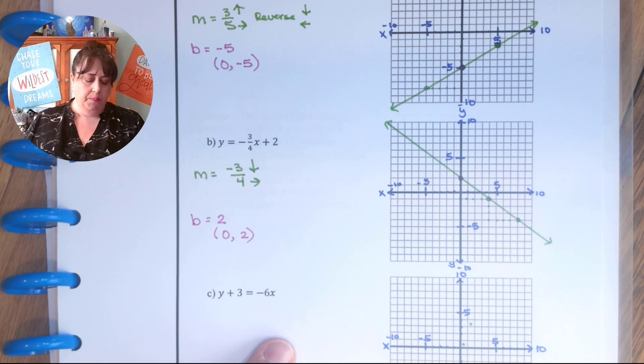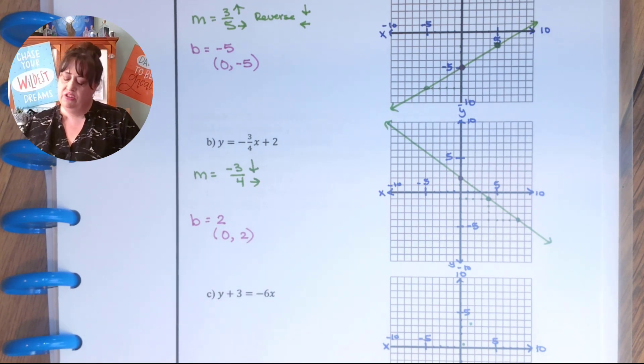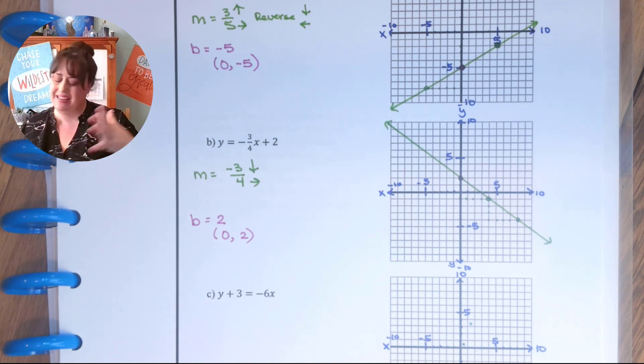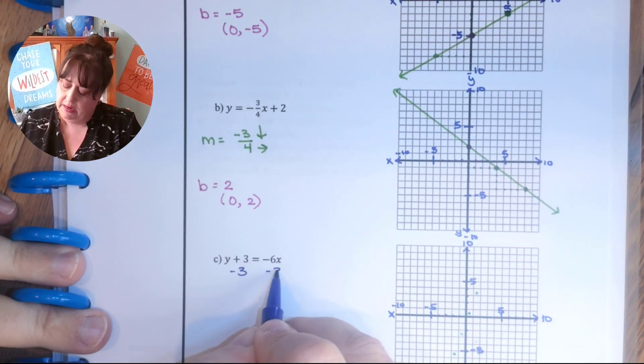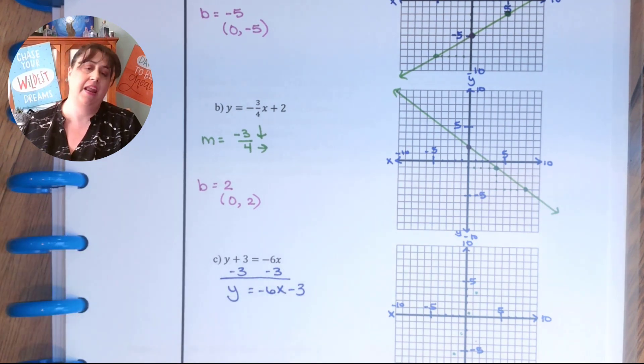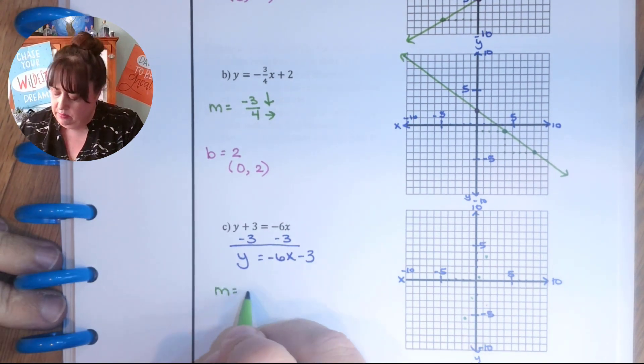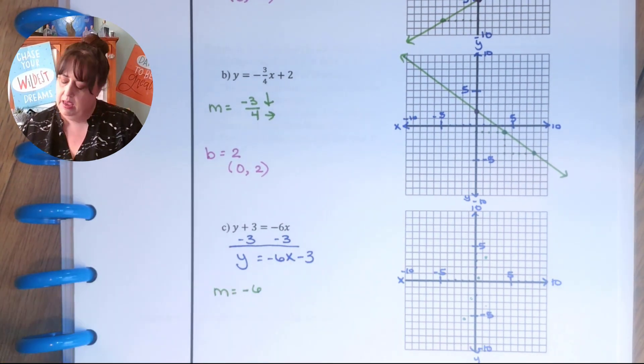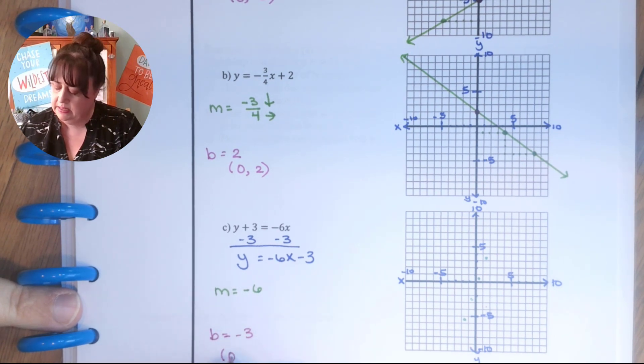So this next one is kind of hard because it doesn't say y equals mx plus b. It just says y plus 3. But that's okay. I just solve it for y. So I'm going to subtract 3 off both sides. So y equals negative 6x minus 3. Now it says y equals mx plus b. So m is equal to negative 6 and b is equal to negative 3. So that is (0, negative 3).